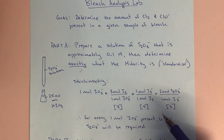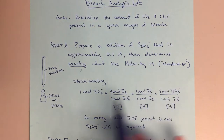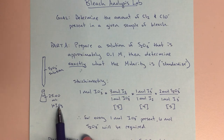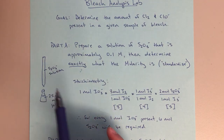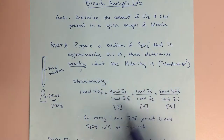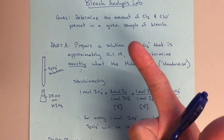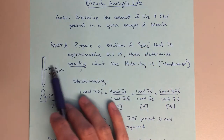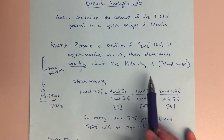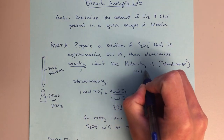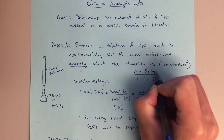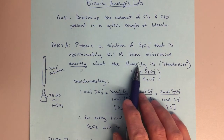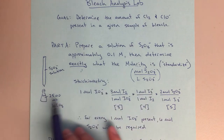So the whole point of Part A is to standardize this solution. We put in a known number of moles of KIO3, and from that, using the stoichiometric relationship, we figure out the exact molarity of our S2O3 thiosulfate solution. We'll know the moles of S2O3, and we'll know the volume dispensed from the burette. So moles S2O3 divided by liters S2O3 gives us the molarity.